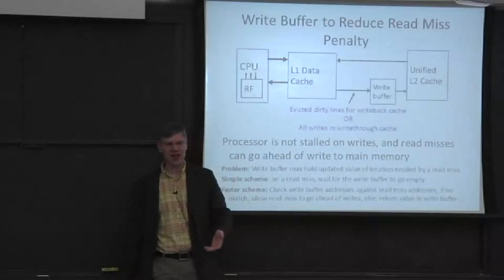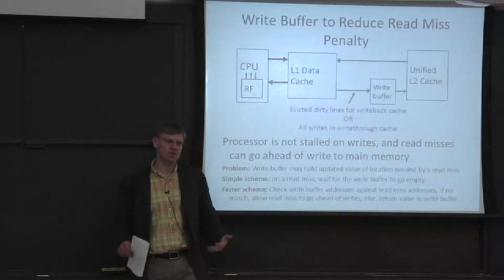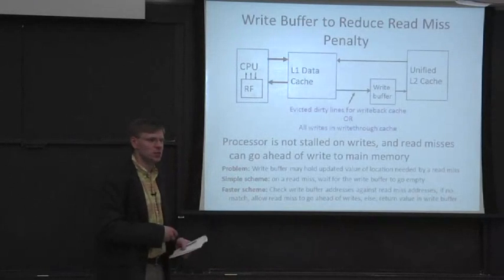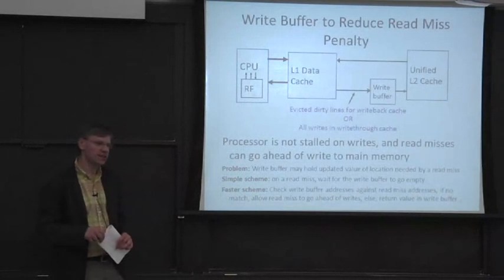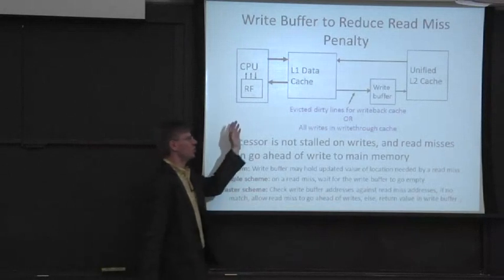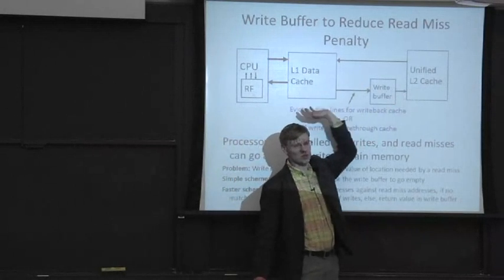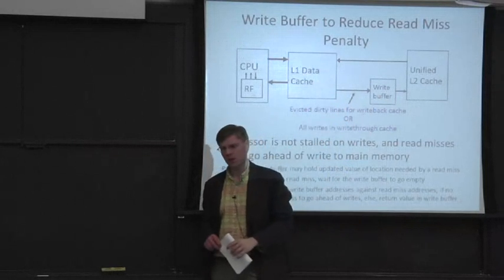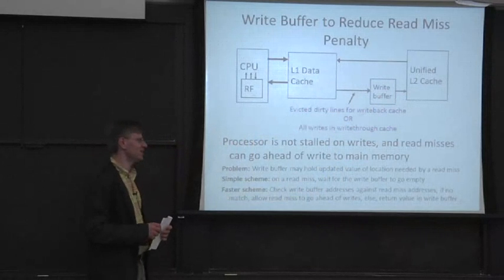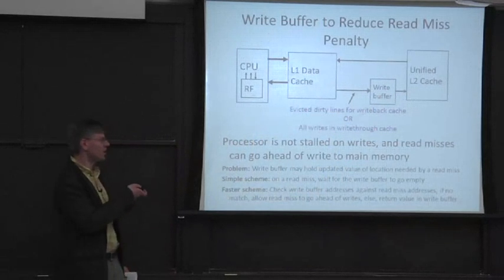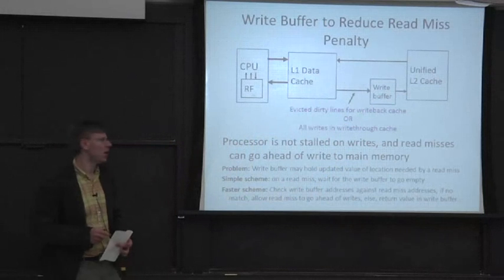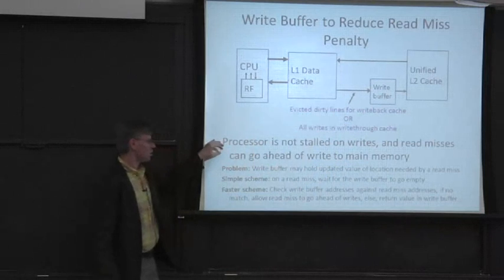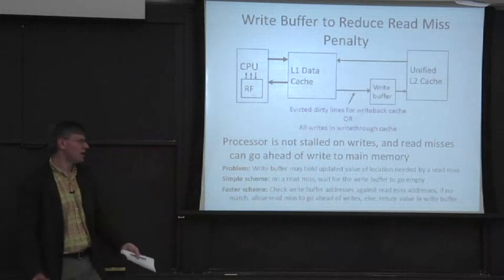We do a read, and it aliases that same location. And we need to evict that line, or create a victim. In a naive implementation, we'd actually have to sit there and wait for all that data to go out to main memory while we go to do the read and get the data and fill it in. That's not very good. We sort of have to wait for this evicted, dirty line. We'll talk about that in a second. So the processor could be just stalled, waiting on writes.